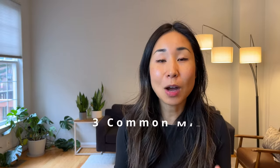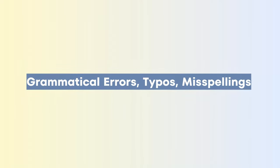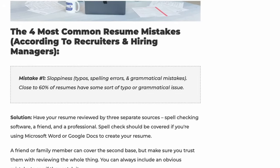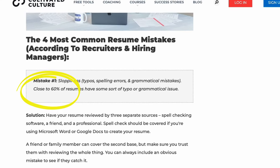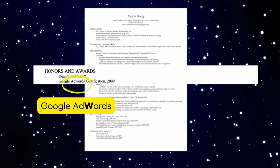There are three common mistakes you'll see in resumes. The first is grammatical errors, typos, and misspellings. According to Cultivated Culture, 60% of resumes have some sort of grammatical error. Even on my older resume I could see I was spelling Google AdWords with a lowercase W when it should be uppercase — not a huge red flag, but any small thing a recruiter notices is a reason to reject your resume. Make sure you get your resume checked by at least three different peers, whether through software like Microsoft Word or a professional friend.